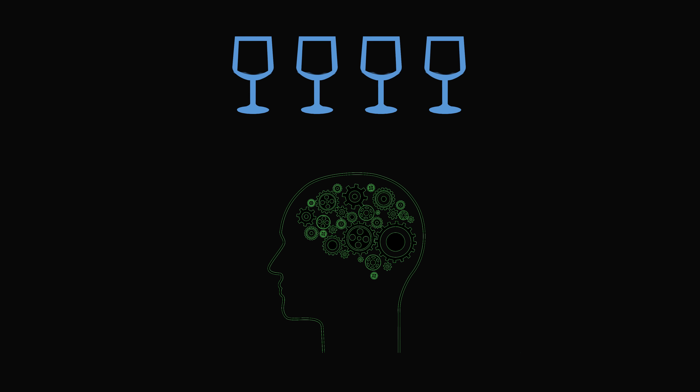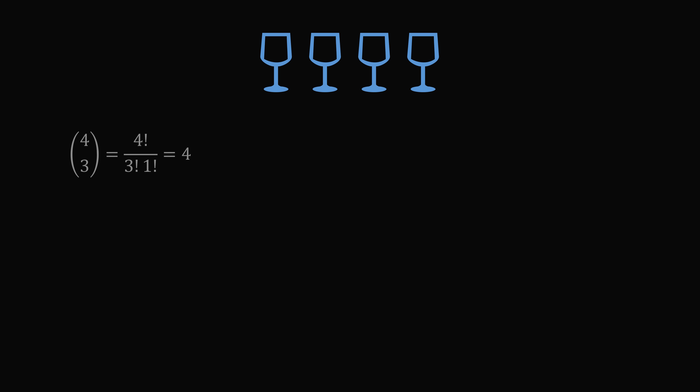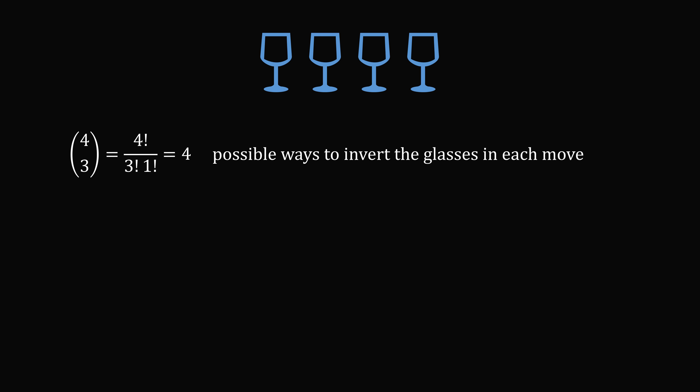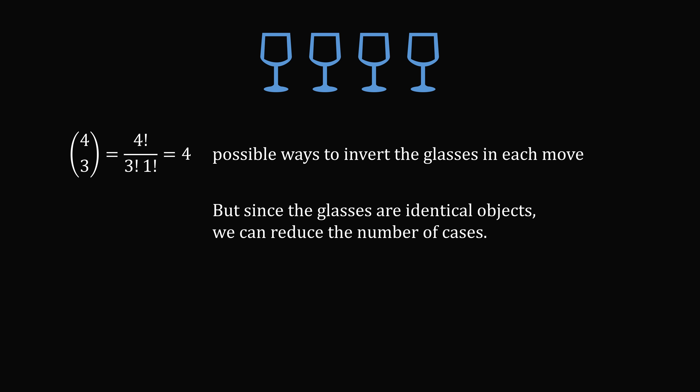So let's work it out. In each move we need to turn over three different glasses. There are four choose three ways to do this — that's four factorial over three factorial times one factorial — which equals four possible ways to invert the glasses in each move. You might think we have to check four things in each move, but not so. Since the glasses are identical objects, we can reduce the number of cases by just considering which glasses are up and which are down.